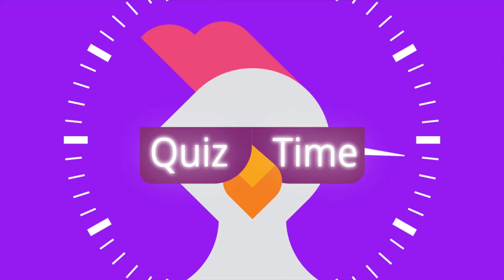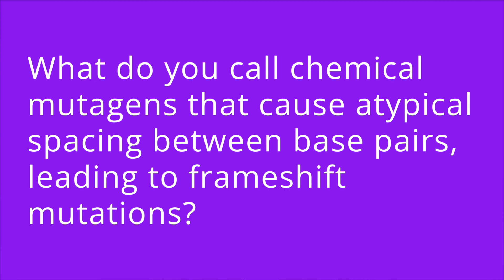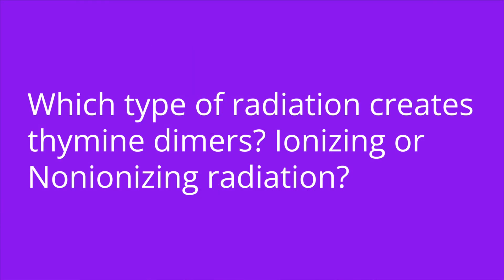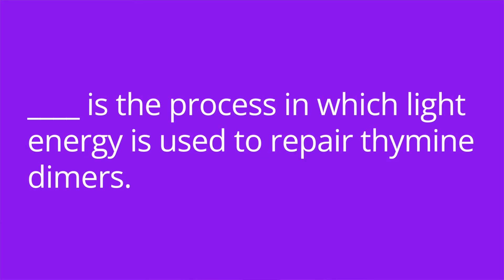It's quiz time, and I have three questions for you. Question number one: what do you call chemical mutagens that cause atypical spacing between base pairs leading to frameshift mutations? The answer is intercalating agents. Number two: which type of radiation creates thymine dimers — ionizing or non-ionizing radiation? The answer is non-ionizing radiation. And number three: blank is the process in which light energy is used to repair thymine dimers. The answer is photoreactivation.